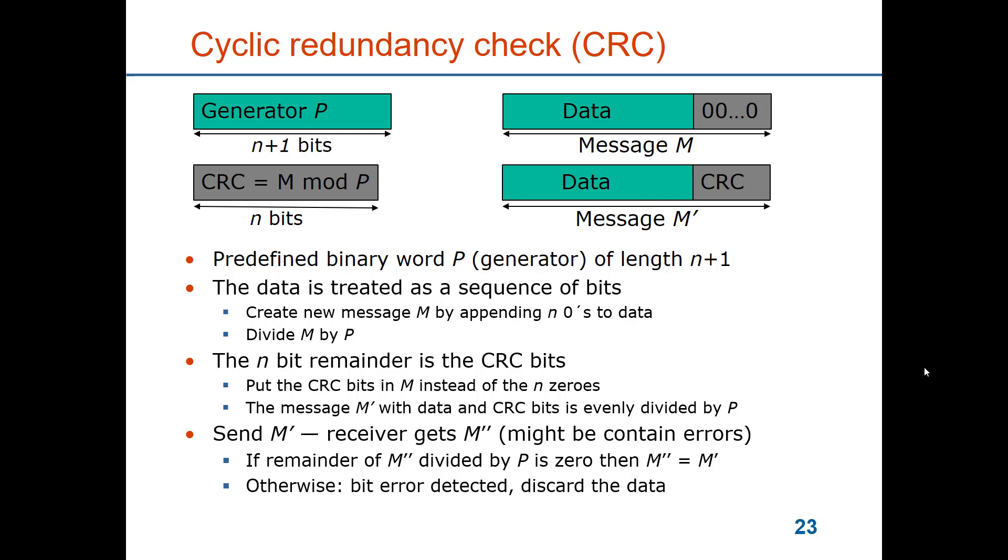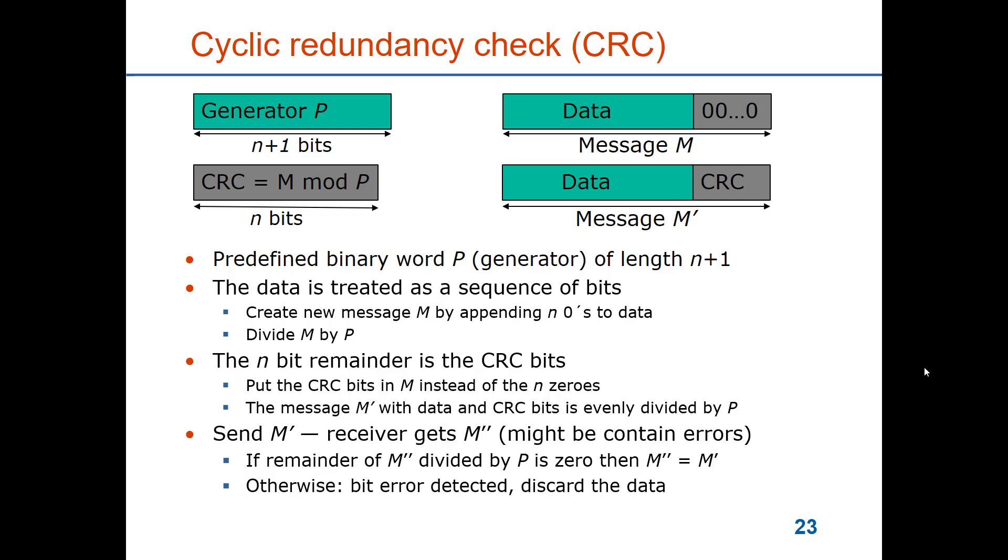So you send m prime and the receiver gets some message m bis which might contain errors, and in that case m bis will not be the same as m prime. The way that the CRC is created is such that the receiver can take m bis which it has received and divide it by p. If it gets a remainder of zero then it knows that the data has been correctly received, can remove the redundancy and it has the data to deliver to a higher protocol layer. Otherwise there are bit errors or burst errors in the data and the frame has to be discarded.